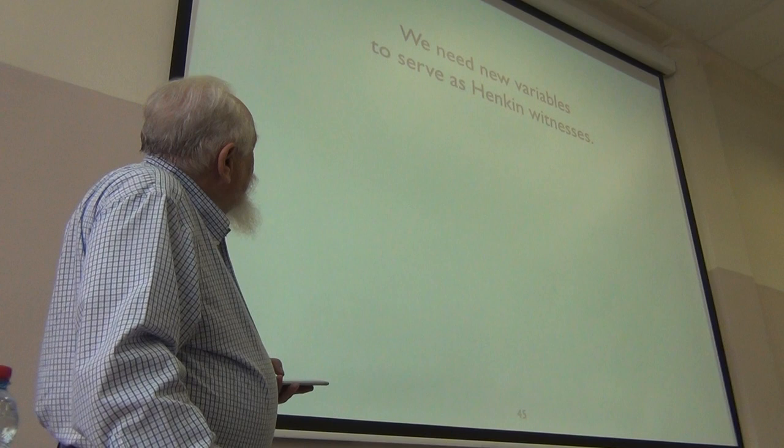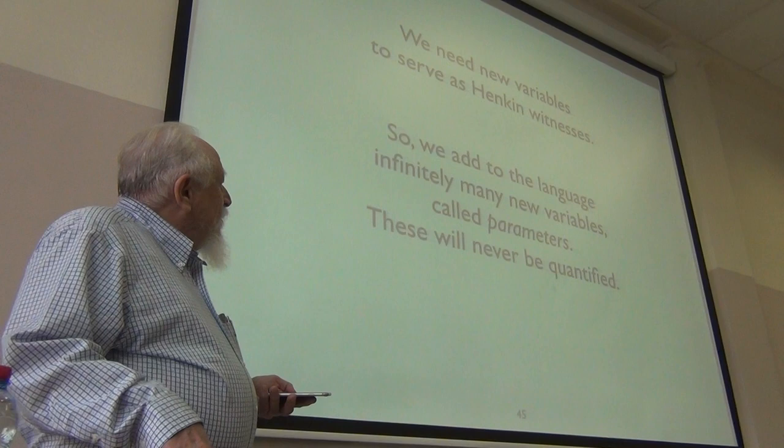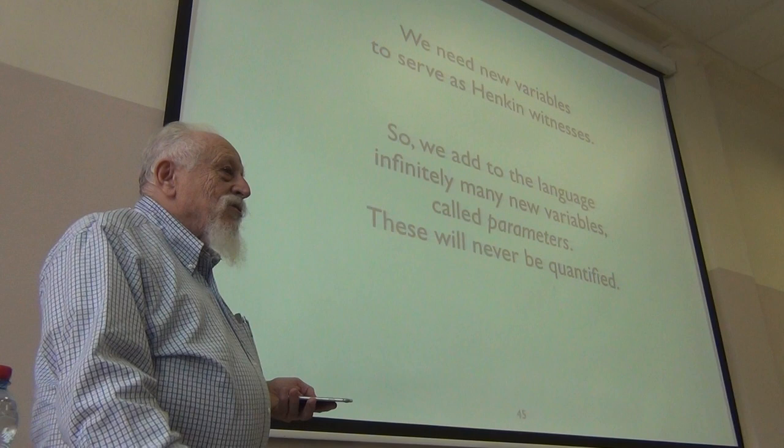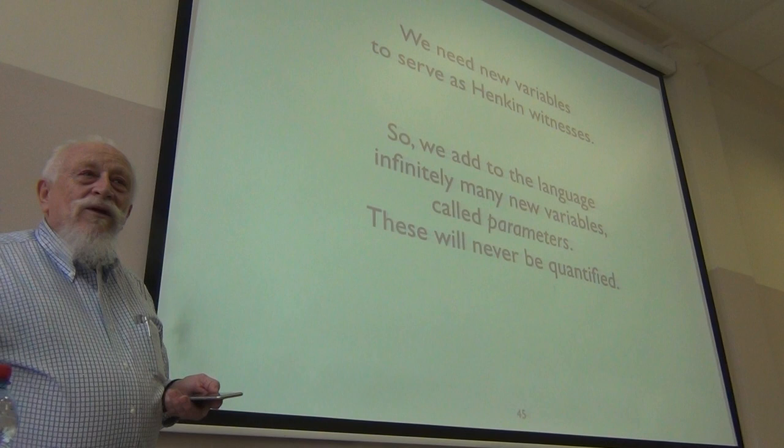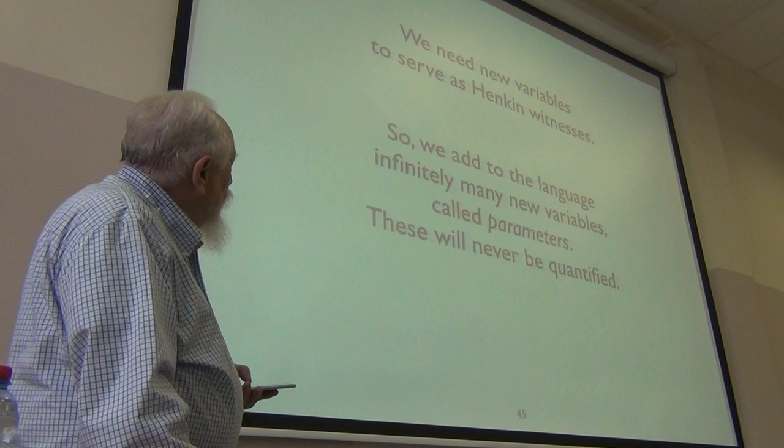So we'll need those. So take the language we have and add new variables. Because the ones we have are already used for things. These are going to be variables for serving as Henkin witnesses. I'll call them parameters. And I'll make the point that I'll never quantify them. So in effect, they don't look like constants to the outside world.